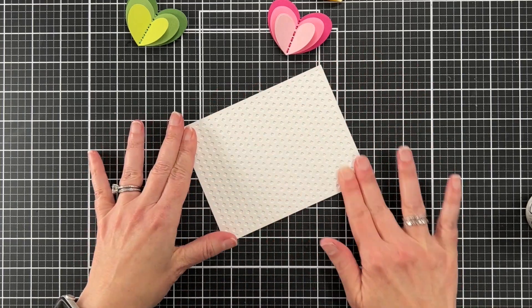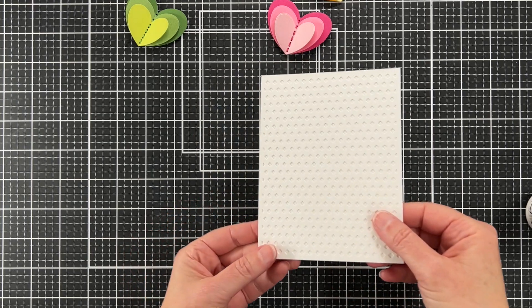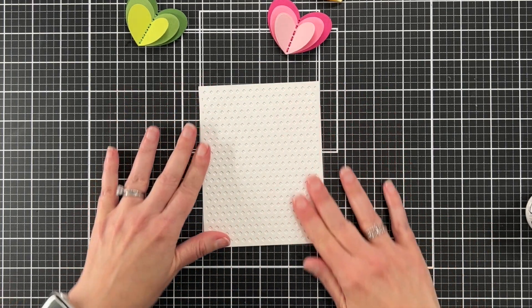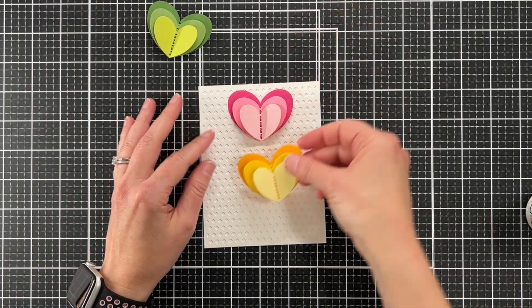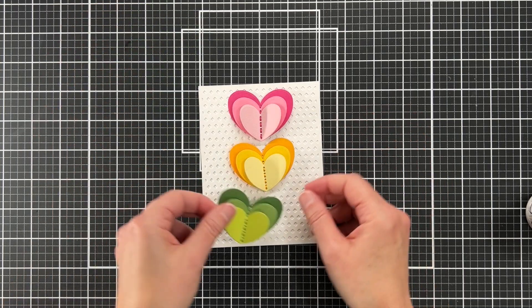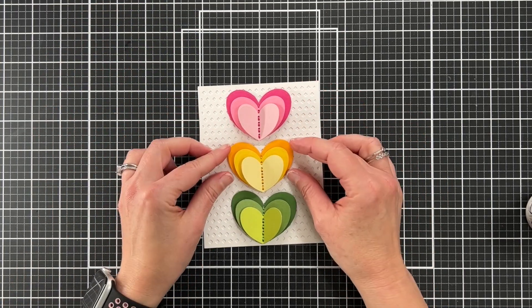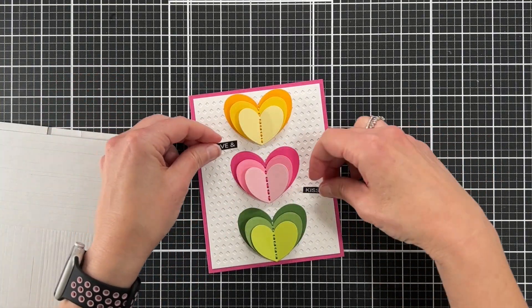Now my card base is ready and I'm just going to glue down the bottom heart, the largest heart of each color. That will leave the other two hearts loose to create that dimension. Once I have my design planned, I'm also going to attach that white piece to a pink card base.